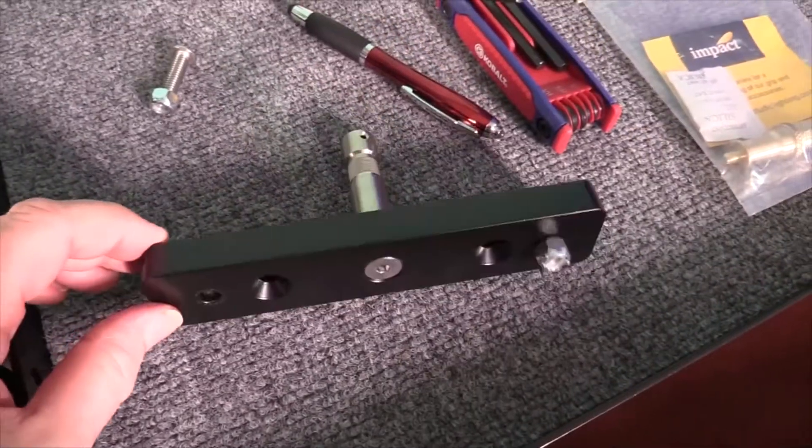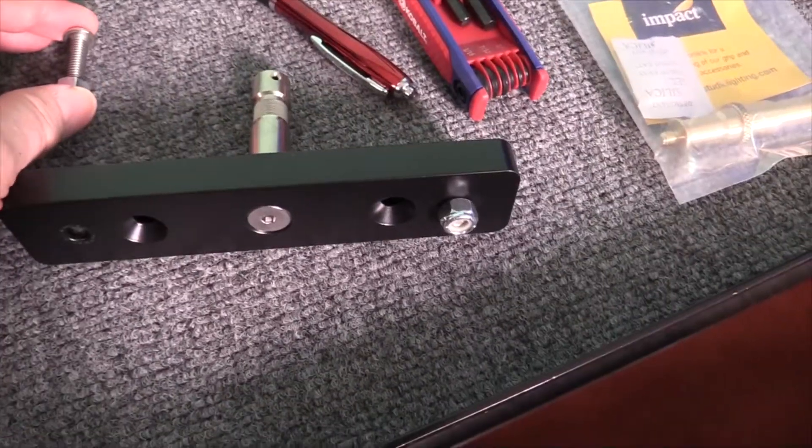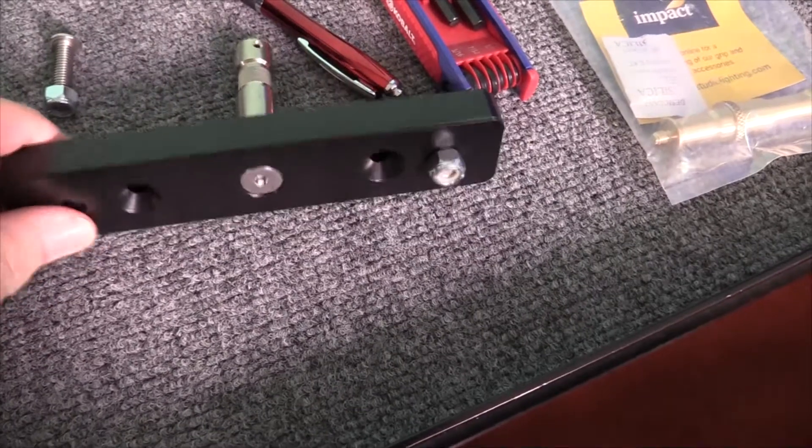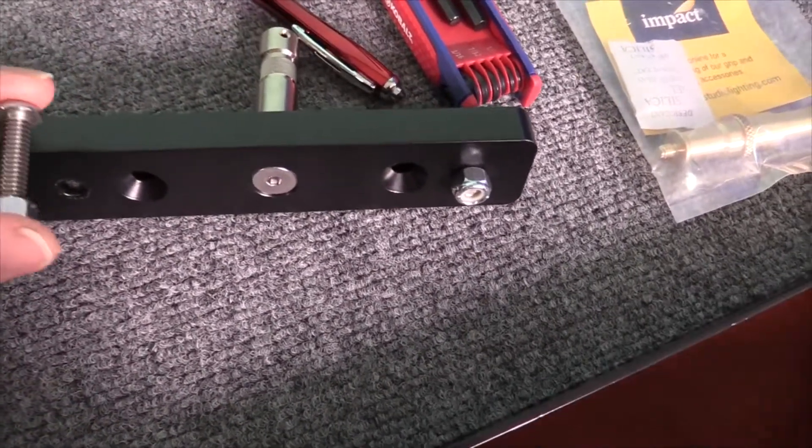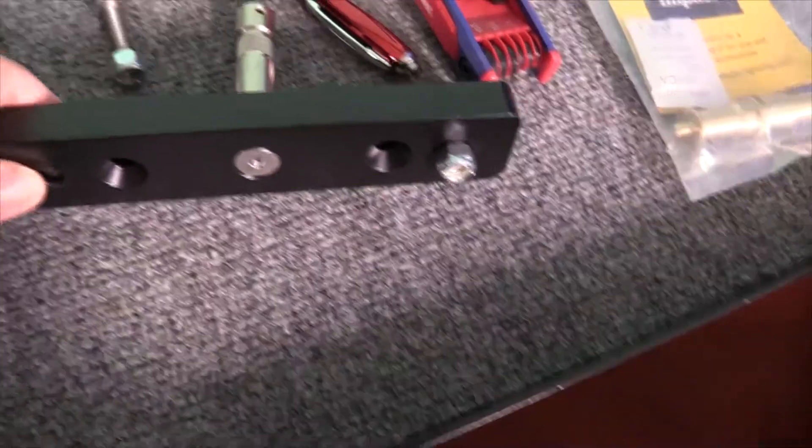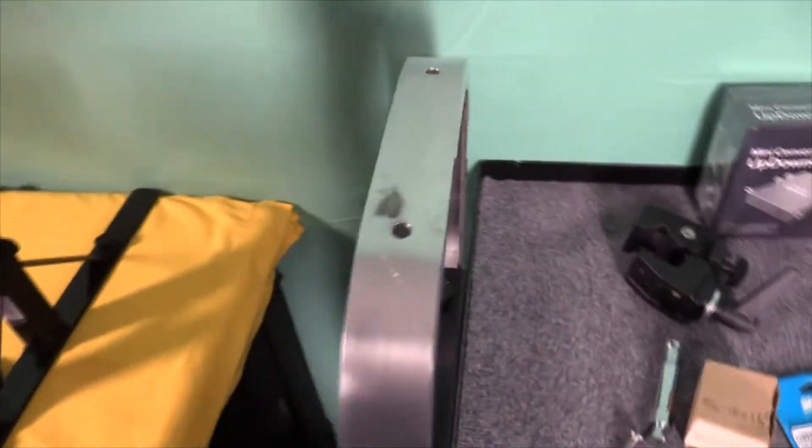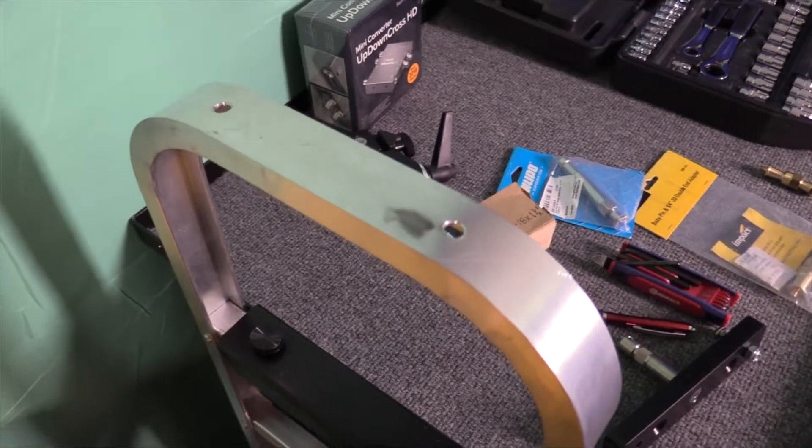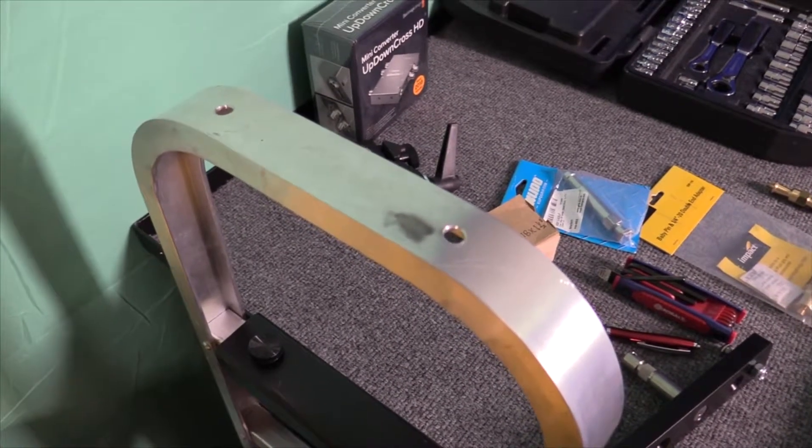Now the only thing we've done is we've added a couple of lock nuts. These bolts are 5/16ths 18 by an inch and 3/8ths. And all we've done is add 5/16ths washers. And we're going to mount this. So what you're going to see is the before and after. Now if you've got the standard nose, you'll have to drill these holes. But these holes are pre-drilled.